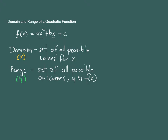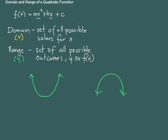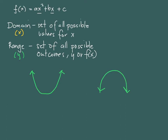You will see that you only need about 5 seconds or less to determine the domain of the quadratic function. Remember that a quadratic function ax squared plus bx plus c can only have two possible graphs — the one opening up or the one opening down.